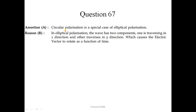Question number 67. Circular polarization is a special case of elliptical polarization — this is correct. In elliptical polarization the wave has two components: one traversing in the x direction and one in the y direction, which causes the electric vector to rotate as a function of time. This is also correct and is the correct explanation of the assertion. So option 1 is correct.